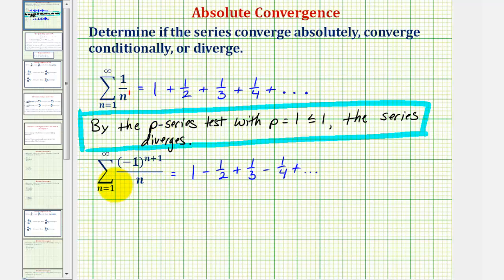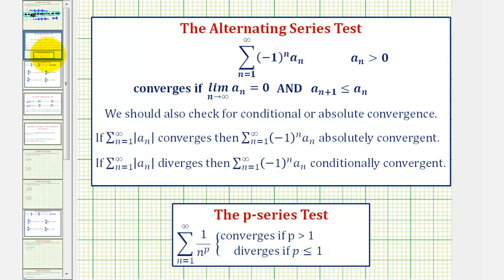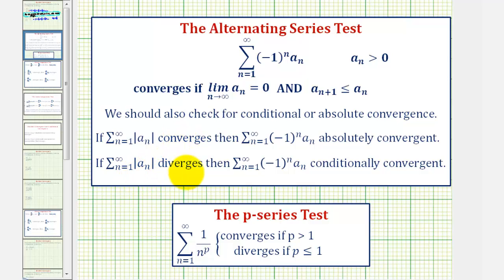For the alternating series, the non-alternating part, a sub n, would be equal to one divided by n. To review the alternating series test: if we have a series in this form, where a sub n is greater than zero, and the limit as n approaches infinity of a sub n equals zero, and a sub n plus one is less than or equal to a sub n, meaning the terms are non-increasing, then the alternating series converges. We'll also determine if the summation of the absolute value of a sub n converges or diverges, which we already know diverges.